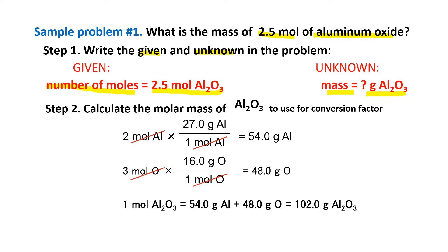Step 2, calculate the molar mass of aluminum oxide first, because it is the one you will be using as the conversion factor. Recall that the subscript in the formula represents the number of moles. The subscript of aluminum is 2, meaning 2 moles of aluminum are in the formula. Convert it to grams by multiplying by the molar mass of aluminum: 27 grams per 1 mole of aluminum. So 2 times 27 is 54 grams of aluminum.